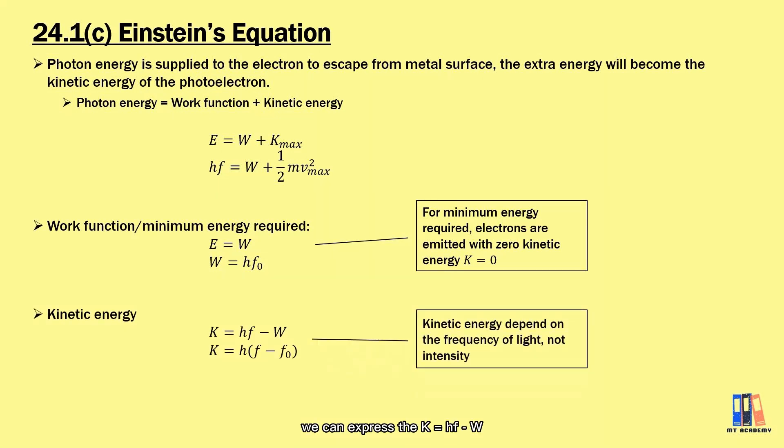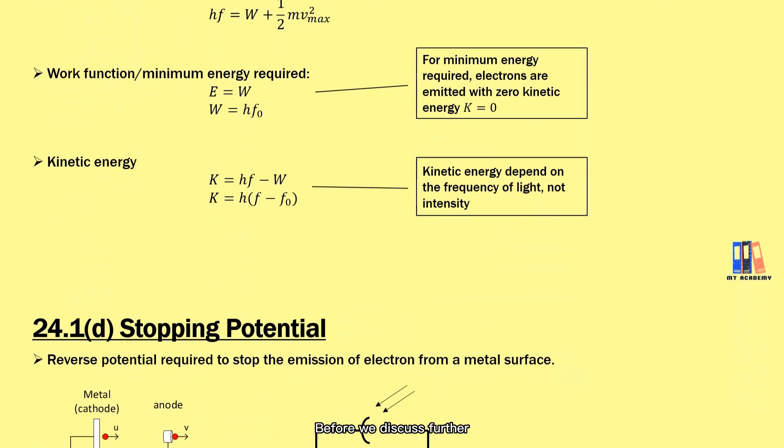Overall, you can express the kinetic energy as K equals hf minus W or h multiply the difference between the frequency and the threshold frequency. Before we discuss further, we shall talk also about the stopping potential.